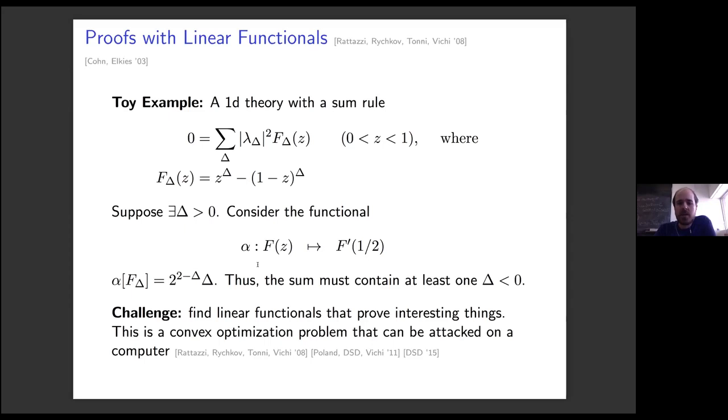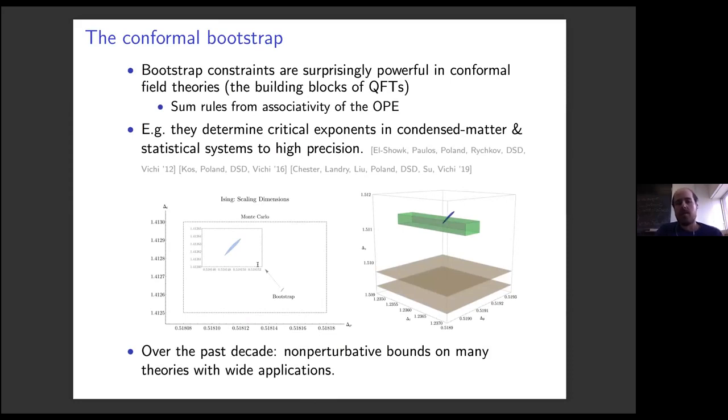In general, the challenge is to find linear functionals that prove interesting things. This result maybe isn't so interesting, but by considering the full space of all possible linear functionals that you can apply to all possible sum rules, you learn interesting information from each functional, and together they might combine to something non-trivial. One of the key insights in this work by Rattazzi, Rychkov, Tonni, and Vichi is that this linear functional method can be useful, and it can often be attacked fruitfully using a computer. This problem of finding interesting functionals that respect positivity conditions is a convex optimization problem that can be solved using linear programming or more generally semi-definite programming.